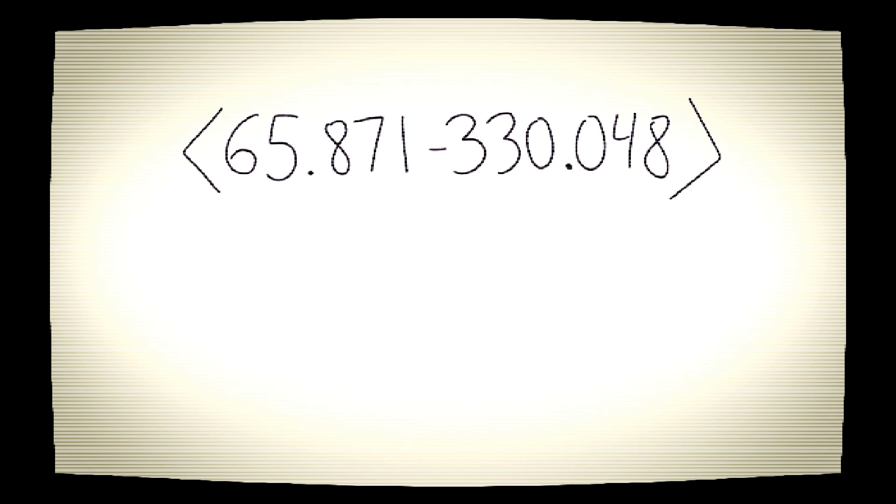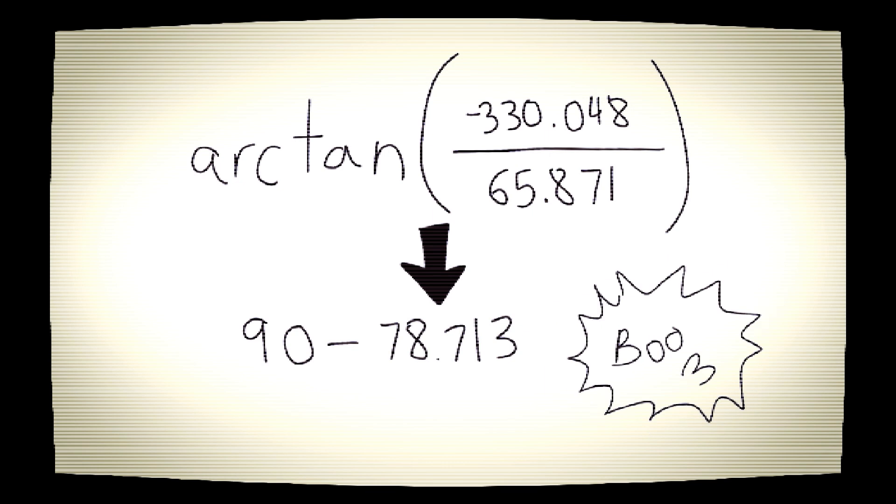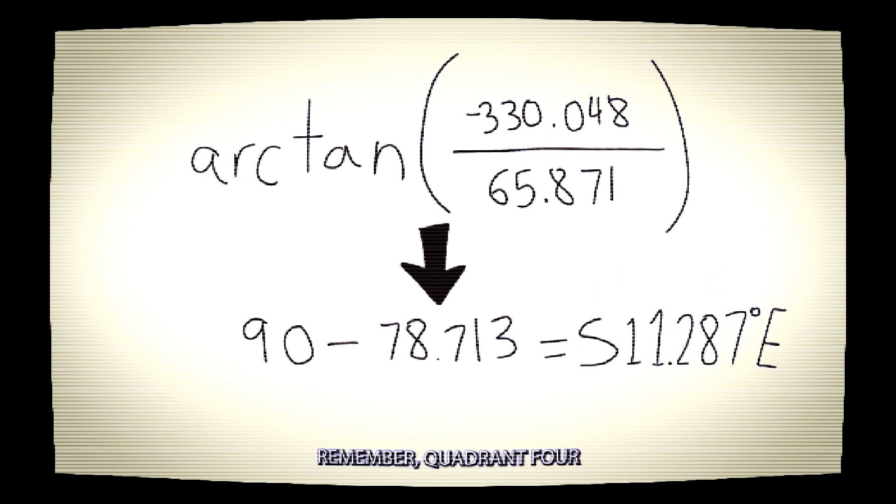We use two values of these legs to find the angular direction of the ground speed vector. Arctangent of negative 330.048 over 65.871. That gives us an angle of 78.713. Since we want the bearing and we have the angle, all we need to do is subtract the angle from 90. The ground speed vector is on the southeast bearing of 11.287 degrees.